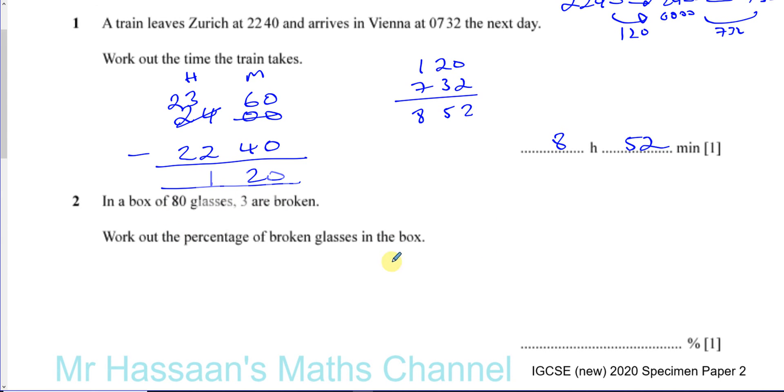You have to find three divided by 80 and work out what that is as a percentage. So three over 80 times 100%, and that will give you your answer. You can simply stick that in your calculator.